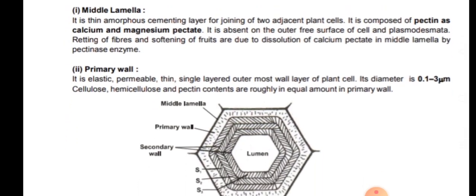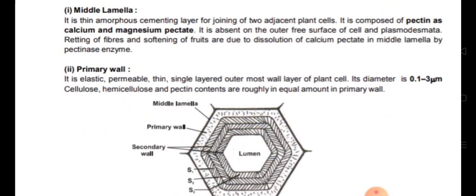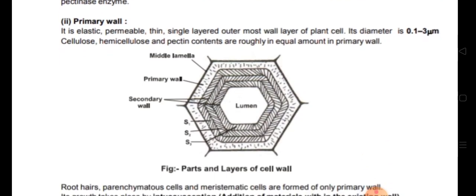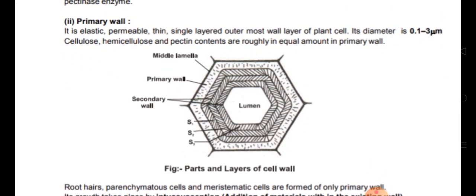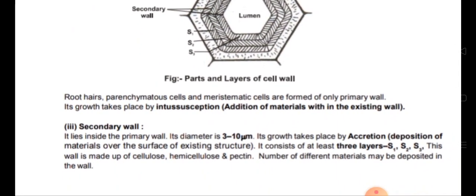The primary wall is elastic and permeable. It is a thin, single-layered outermost wall layer of the plant cell. Its diameter is 0.1 to 3 micrometers. It is made up of cellulose, hemicellulose, and pectin, present in equal amounts. The central cavity visible in the diagram is called the lumen, which contains the cell organelles and cytoplasm. Root hairs, parenchyma cells, and meristematic cells are formed of only the primary wall.